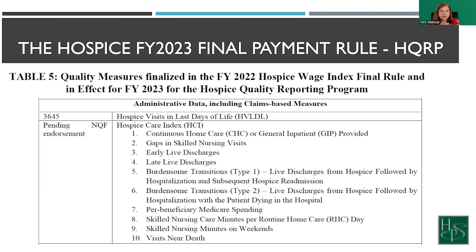It is very important that we begin to understand these new measures and how they're going to impact public reporting. The public is looking at the Care Compare site — that's where they're comparing one hospice to another to help make the decision as to where their patient might receive care. Hopefully this information today has been very helpful to you. If you ever need any assistance with your quality reporting program interpretation, please don't hesitate to let us know at HPS. I hope you have a fabulous week, and I look forward to seeing some of you soon at a live state or national conference near you.